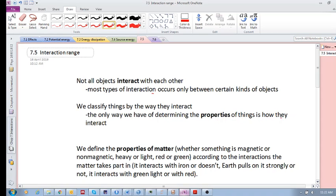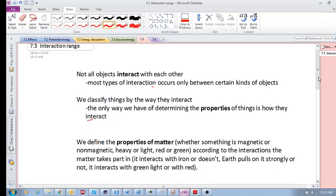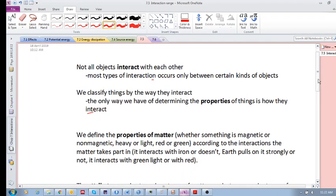The only way we have of determining the properties of something, of an object, is to see how it interacts. We define the properties of matter, whether something is magnetic - these are attributes, these properties.